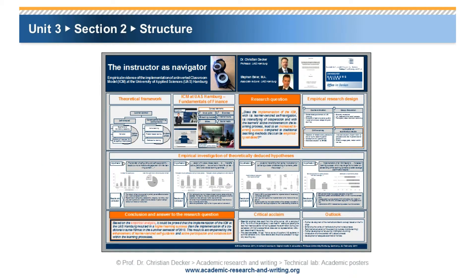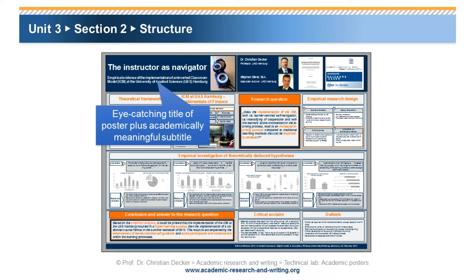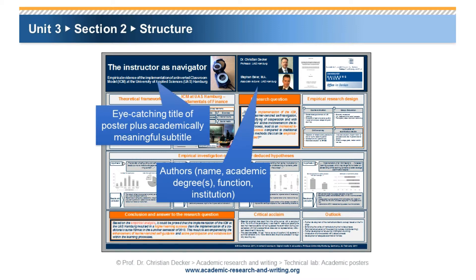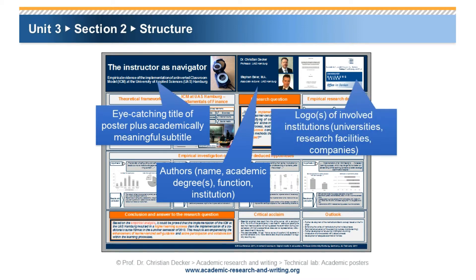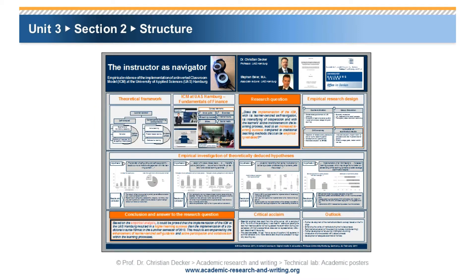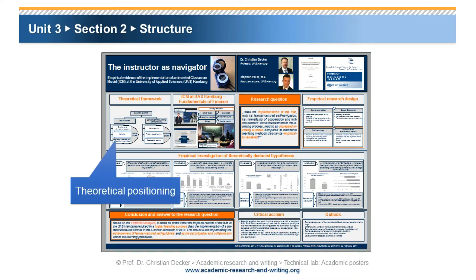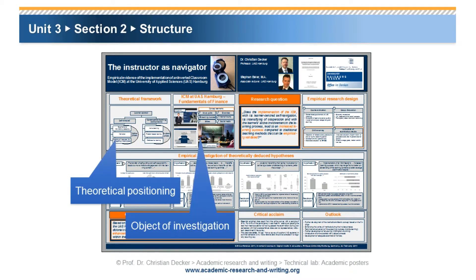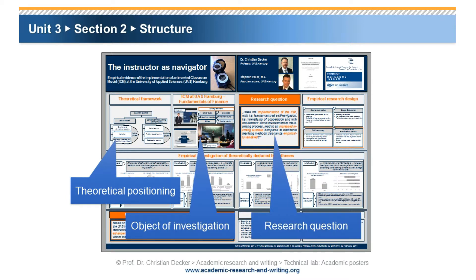Many academic posters feature an eye-catching title, plus an academically meaningful subtitle. They also feature key information, such as information about the authors and the involved institutions. The academic poster substantially reflects the research output, in the sense that it describes theoretical positioning, the object of investigation, the research question, and the research methods.